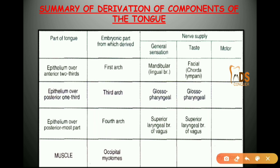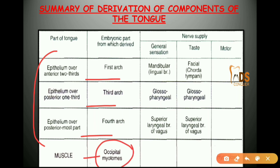This table summarizes the components: the first arch forms the anterior two-thirds, the third arch forms the posterior one-third, and the fourth arch forms the posterior-most part. The occipital myotomes give rise to the muscles, and nerve supply details will be covered in the next slides.